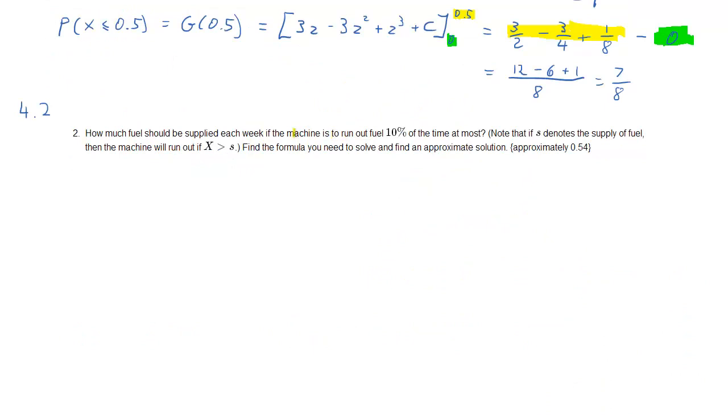So the second part of the question, I copied that here again. So we want to find that s for which the probability that x is larger than s is smaller than 10%. Now, to fully understand this question, let's just recall to ourselves that x was defined between 0 and 1. And we said 1 was a full tank, use of full tank, 0 use of nothing.